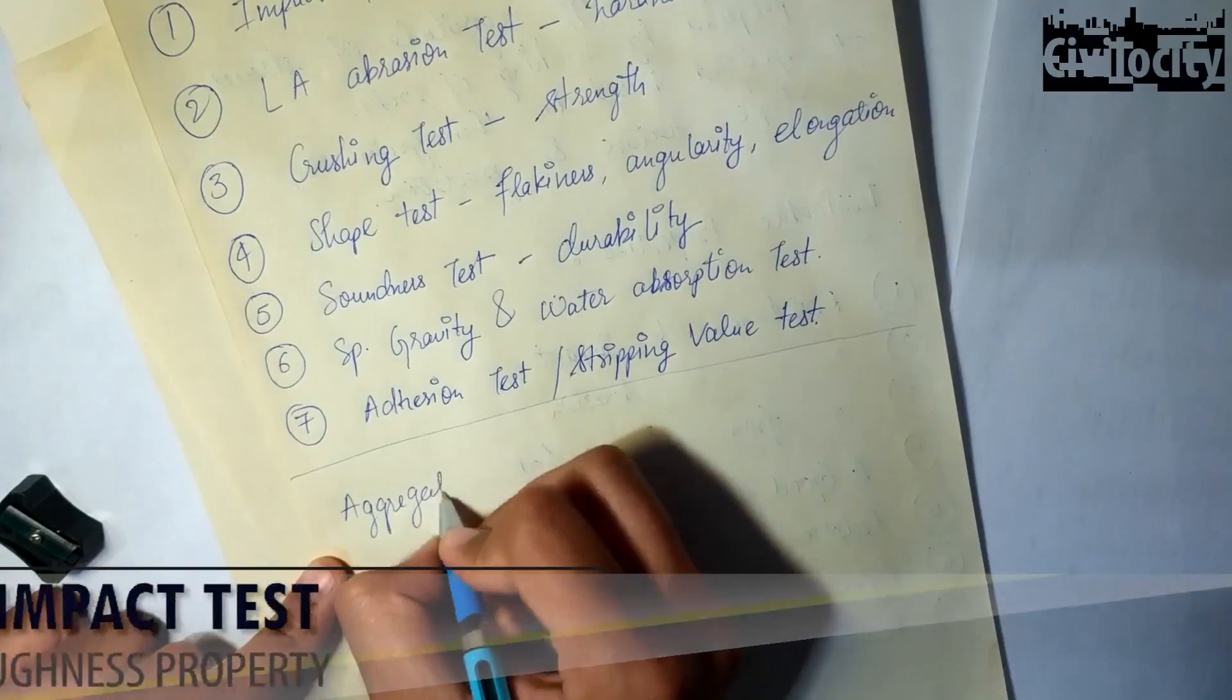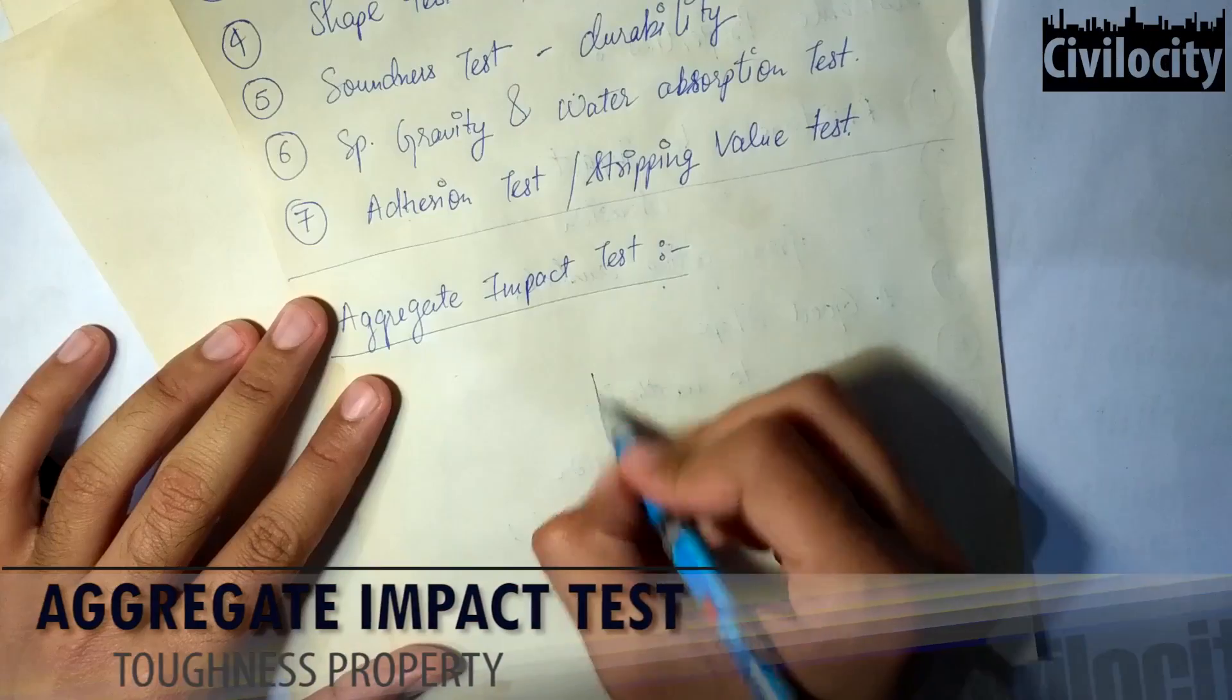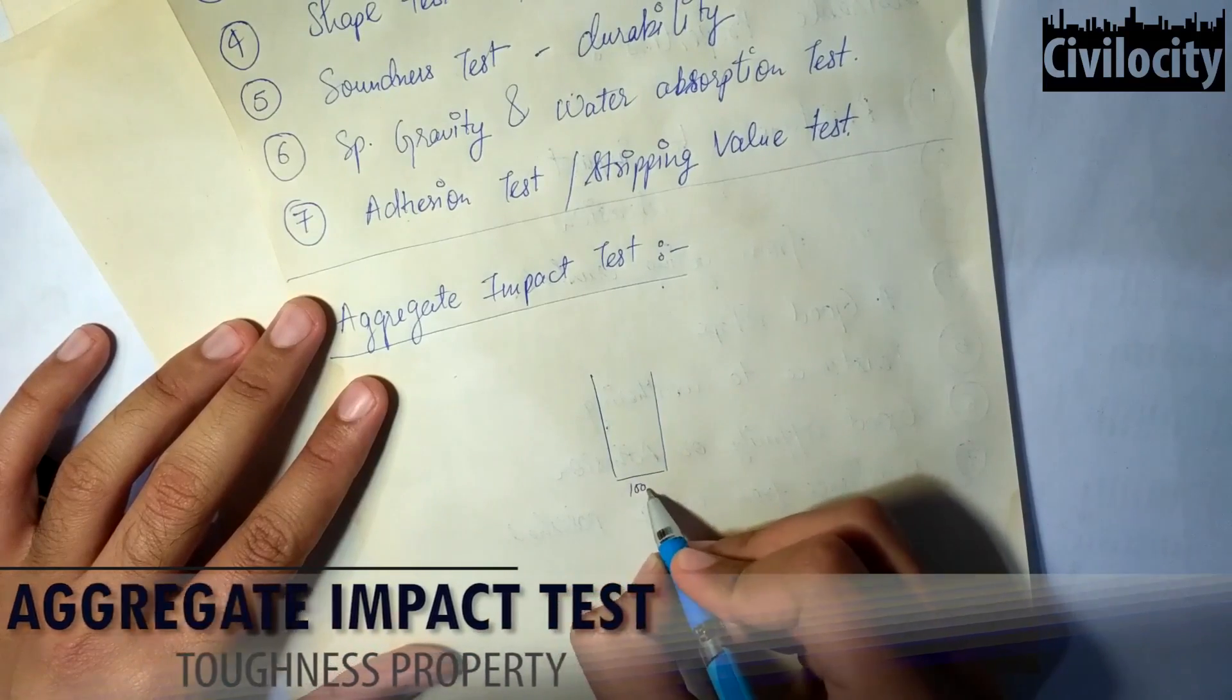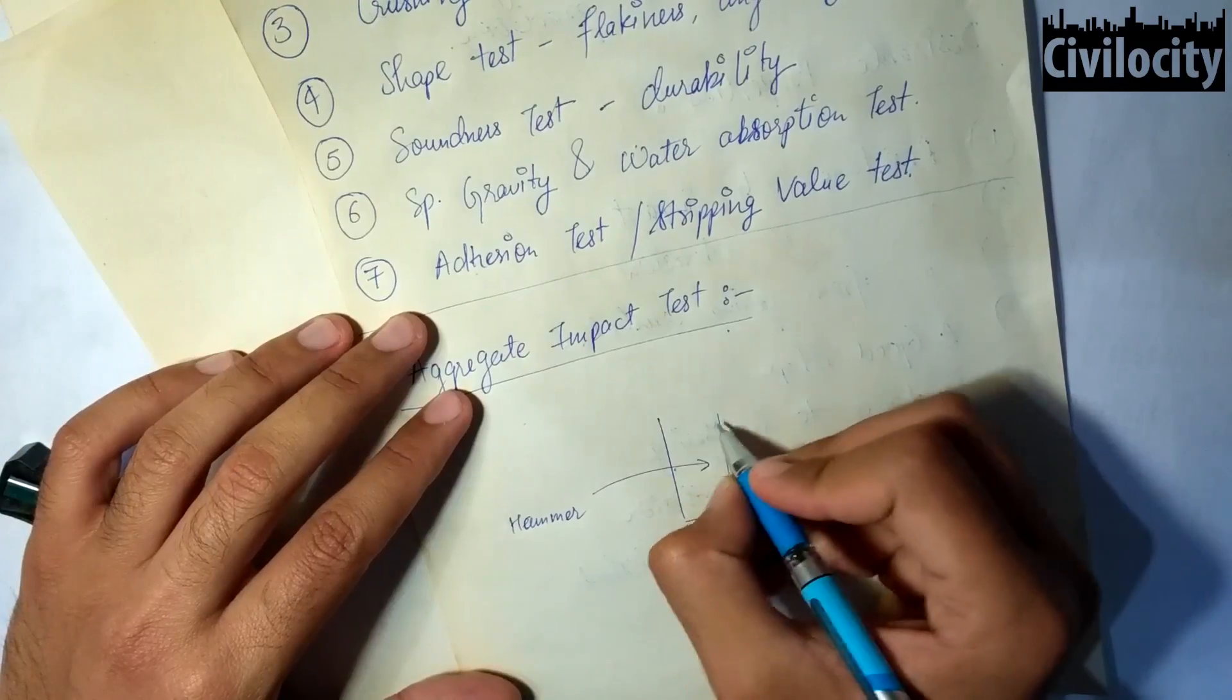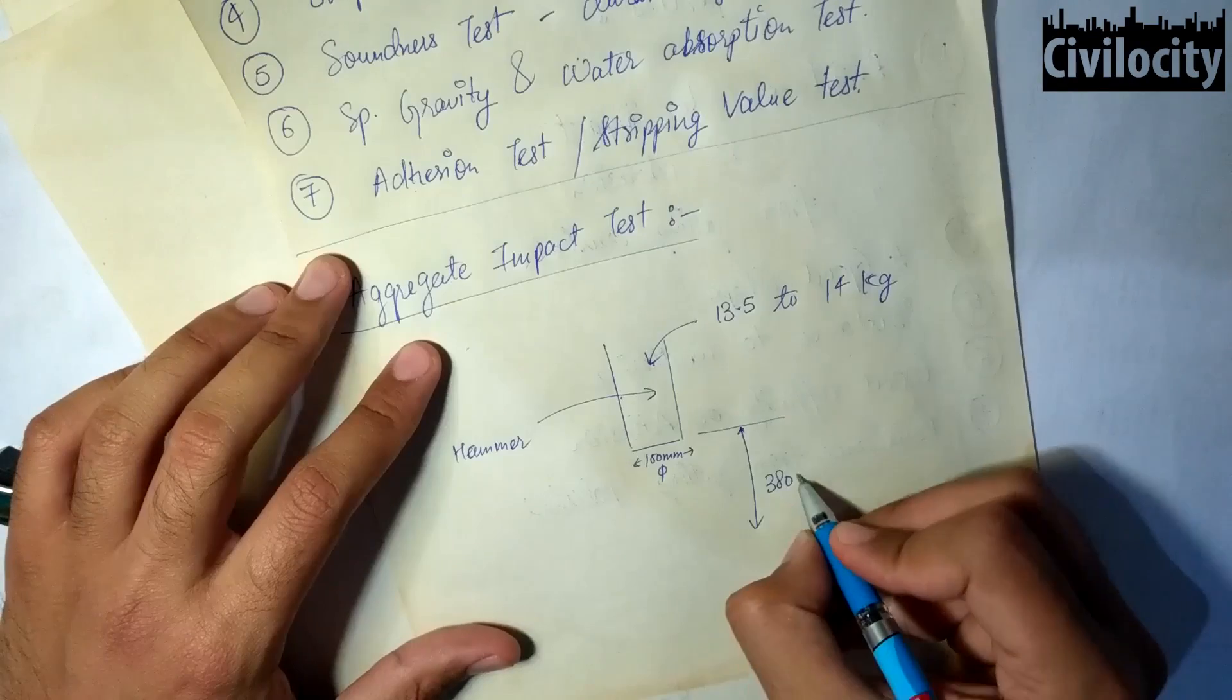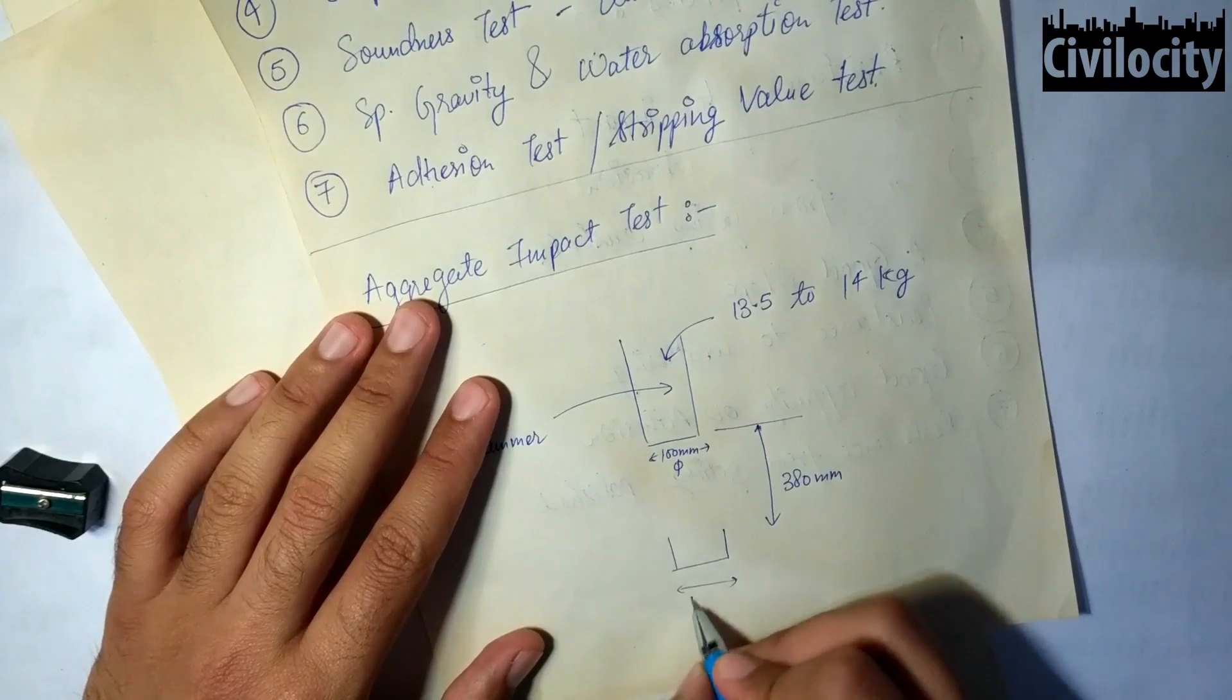So now let's move to our first test which is the impact test. We know that aggregates have to undergo sudden impact of loads when a heavy vehicle passes over them in just a second. And this impact creates the possibility of breaking these aggregates into smaller pieces. So to avoid this breaking we try to evaluate the resistance to impact of aggregates.